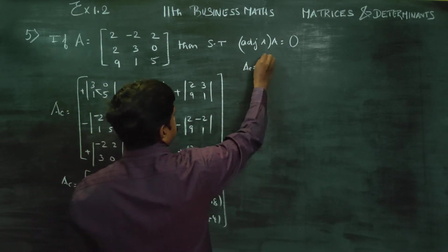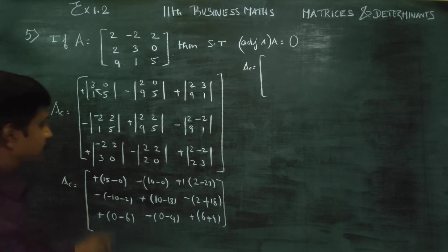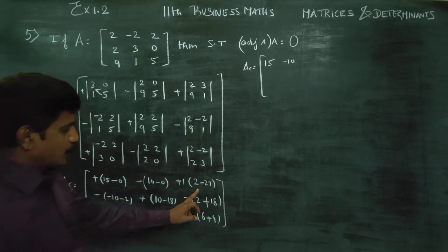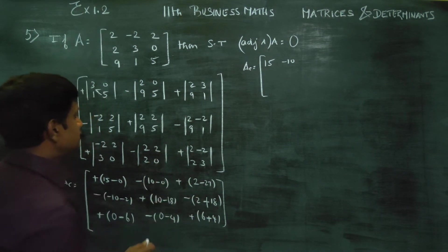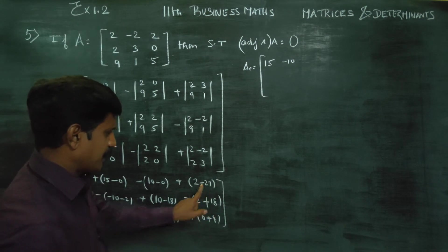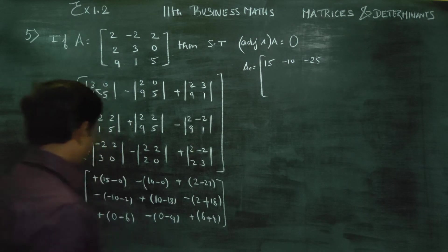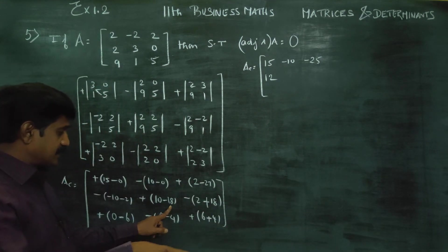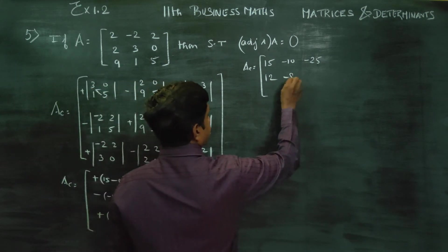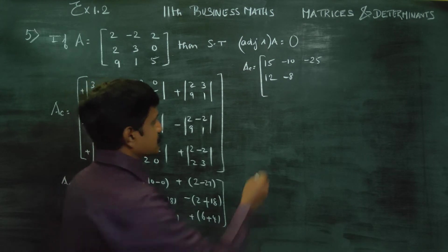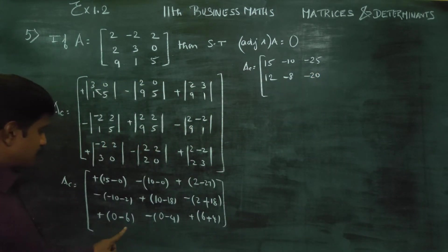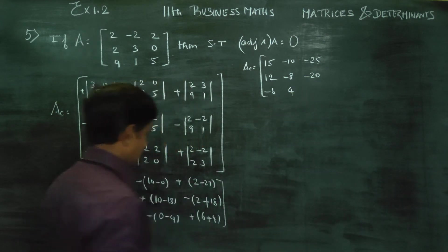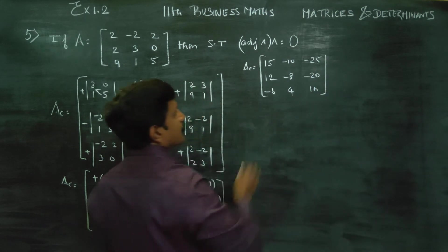Before the final cofactor matrix: 15 minus 0 is 15, plus 15. Then 10 minus 0 is minus 10. 2×2 is 27, minus 2 is 25. Minus 10 minus 2 is minus 12. Plus minus 1, you know minus plus 1, it is 14 plus 1. Plus minus 12, plus 18 minus 8 is minus 8. 18 plus 2, minus 2 is 20. Minus 0. Minus minus 6, plus 4. 6 plus 4 is 10. This is the cofactor matrix.